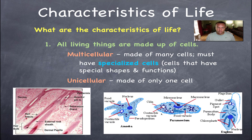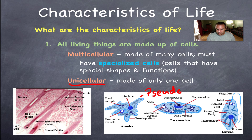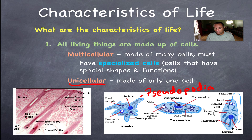All living things are made up of at least one cell. If you're only made up of one cell, you're a unicellular organism — like these protists: an amoeba, moved by pseudopodia (meaning 'false feet'), a paramecia, and a euglena, which is a very interesting protist that can do both photosynthesis and get its own food. These are all very common things you'd find in pond water.